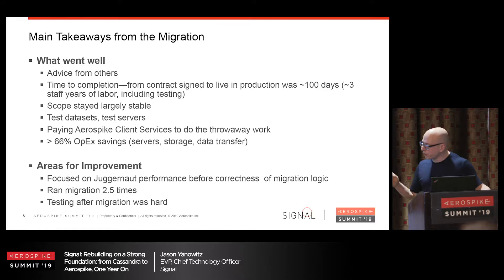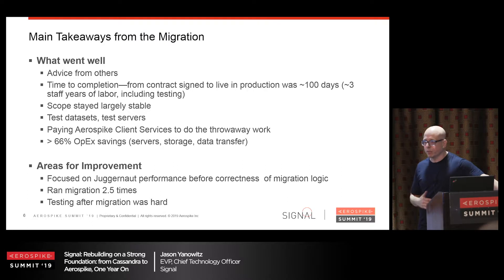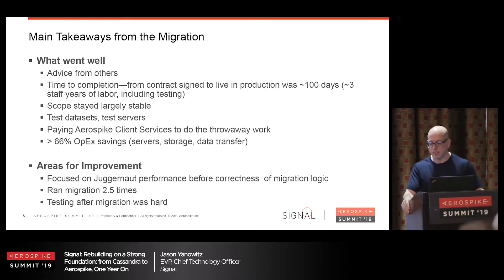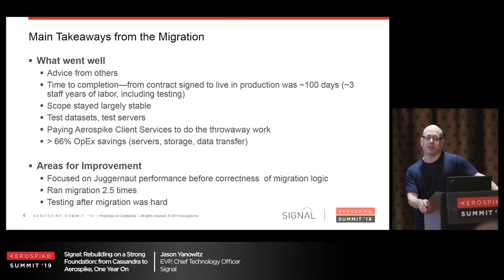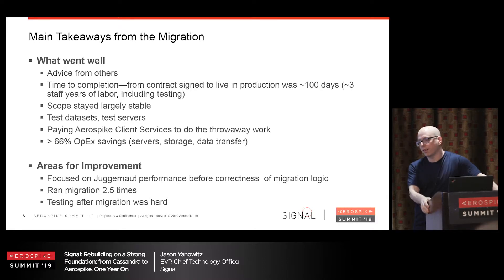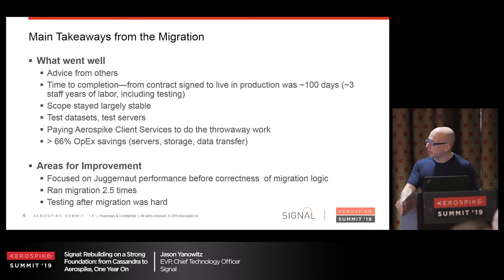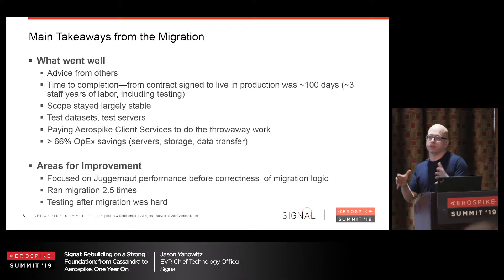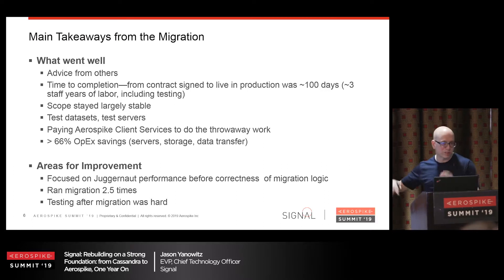The third thing that could have gone better: we had an incredibly robust test plan because our business would fail if we screwed this up. But it turns out that if you run a test that takes 15 minutes on live production data in Aerospike but nine hours in Cassandra, a lot changes in that data over nine hours. What I'd do differently in the future is embed some senior engineers on the test team to help bisect data quality issues. Overall though, nobody cares about any of that stuff anymore — it's all in the distant past.